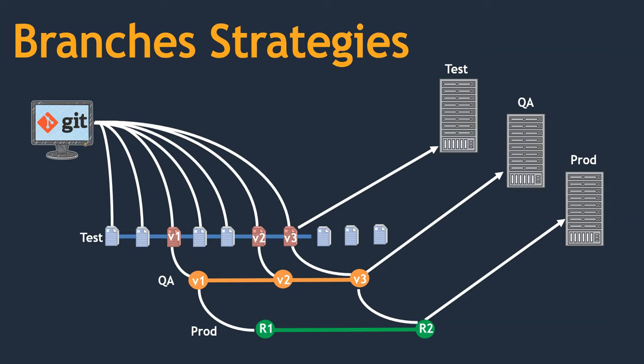Instead of using three branches, we can use two branches or four branches. This is one branching strategy. I am going to talk about one more branching strategy later in this section. That's all for this lecture. In the next lecture, we are going to get hands-on.